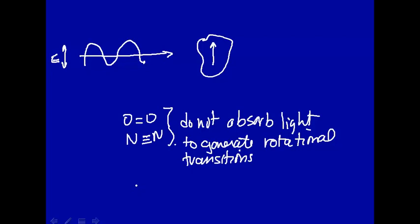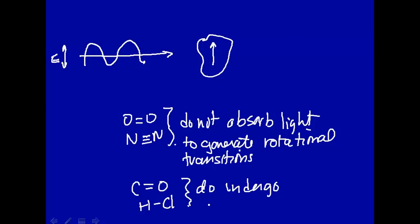On the other hand, things like carbon monoxide or hydrochloric acid do undergo rotational transitions. So for rotational transitions from one state to another, if the molecule does not have a dipole moment, then you cannot have a transition between rotational energy states.